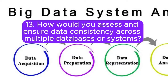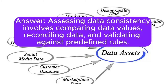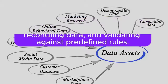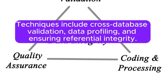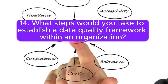13. How would you assess and ensure data consistency across multiple databases or systems? Answer: Assessing data consistency involves comparing data values, reconciling data, and validating against predefined rules. Techniques include cross-database validation, data profiling, and ensuring referential integrity.